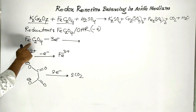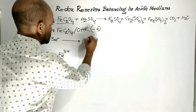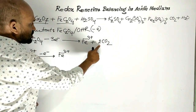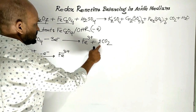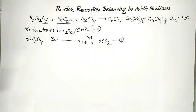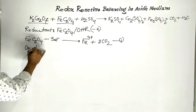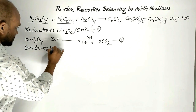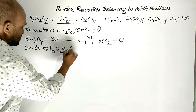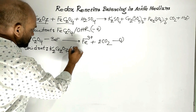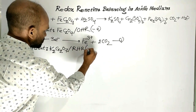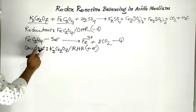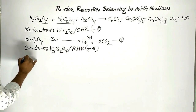As a result, Ferrous Oxalate changes to Ferric ion and two molecules of carbon dioxide are formed. This is Equation number one. Now, for the oxidant: in this reaction Potassium Dichromate is the oxidant, which undergoes a reduction half-reaction through acceptance of electrons.